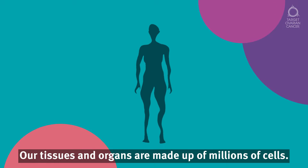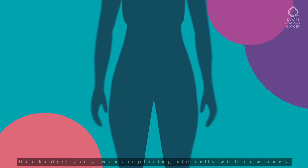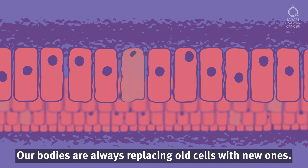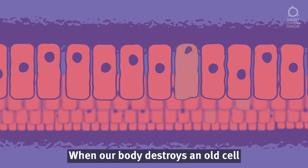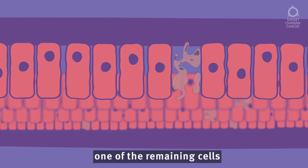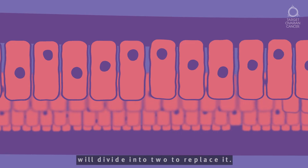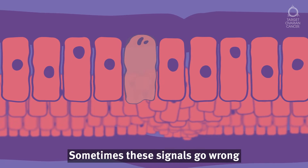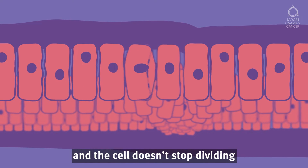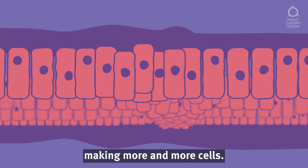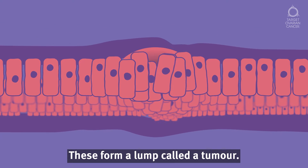Our tissues and organs are made up of millions of cells. Our bodies are always replacing old cells with new ones. When our body destroys an old cell, one of the remaining cells will divide into two to replace it. Sometimes these signals go wrong, and the cell doesn't stop dividing, making more and more cells. These form a lump called a tumour.